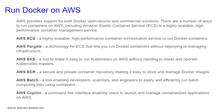Fargate is a technology for ECS that lets you run Docker containers without deploying or managing infrastructure. EKS is a tool that makes it easy to run Kubernetes on AWS without needing to install and operate Kubernetes masters. ECR is a secure and private container repository, making it easy to store and manage Docker images.